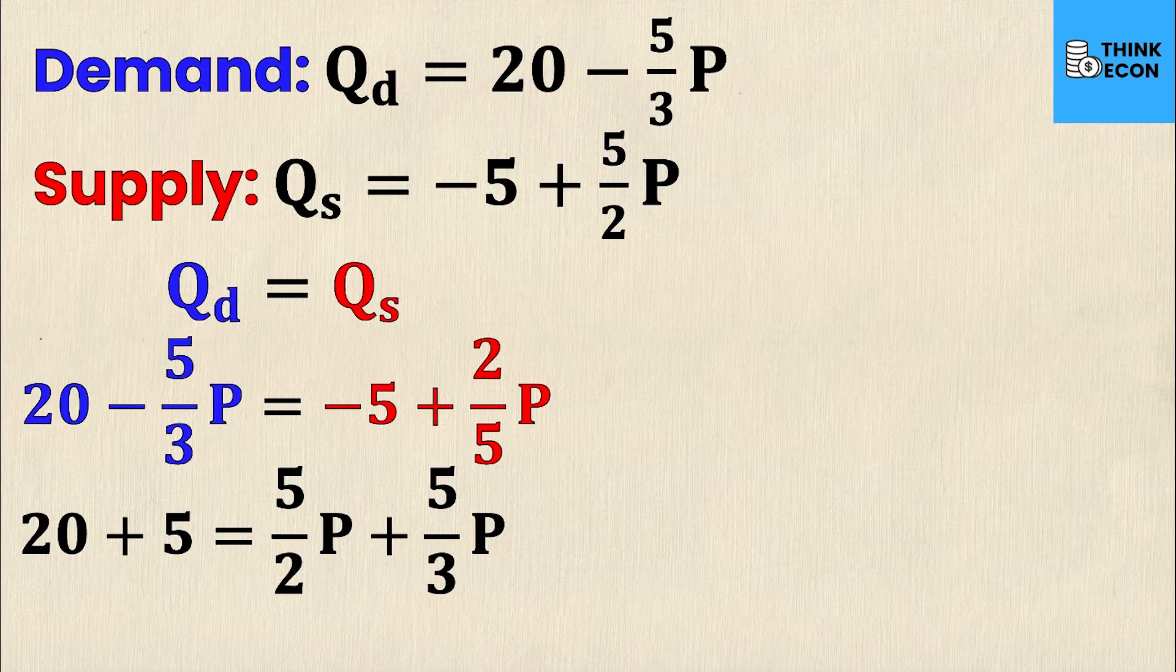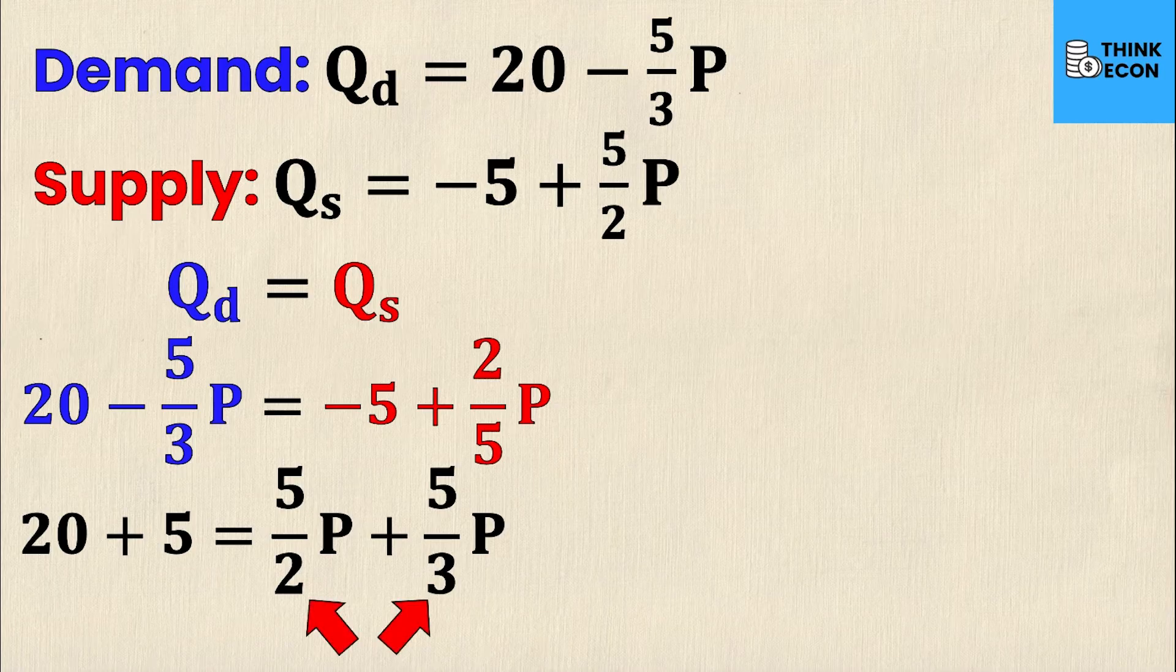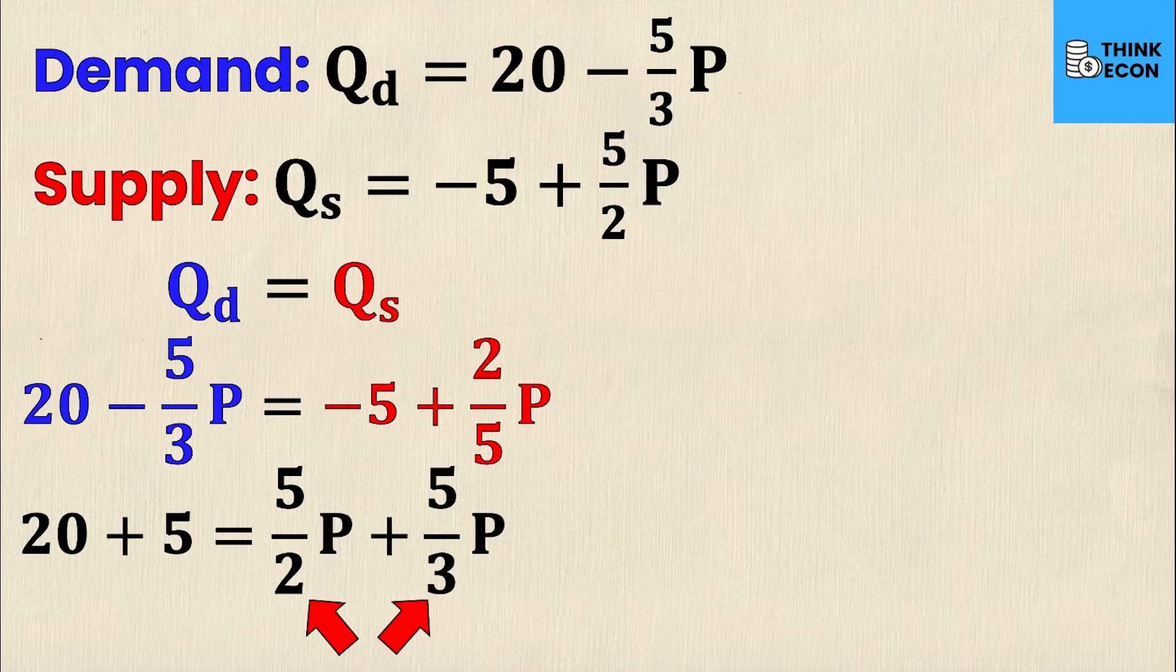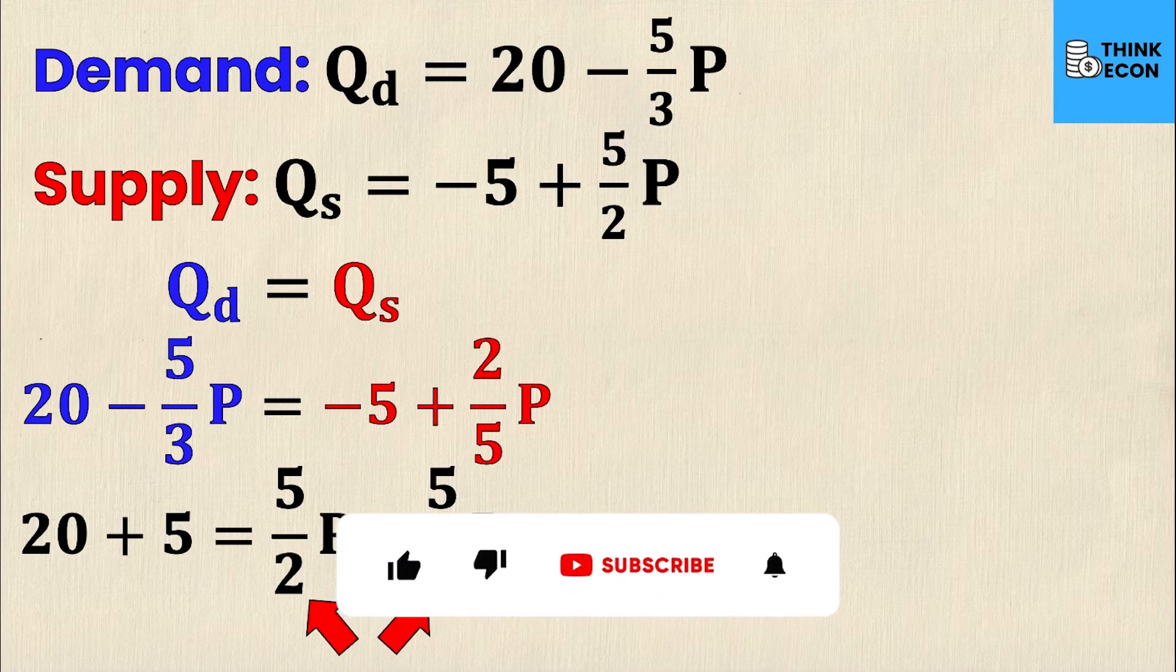Now all of my P's are on one side and all of my constants are on the other. However, here's where it gets tricky with fractions. I can't actually add the two P values because they have different denominators. I need these coefficients to have the same denominator. I'm looking for the lowest common denominator, which is the lowest number that both 2 and 3 go into, and that number is 6.